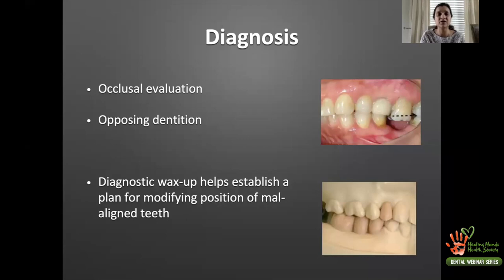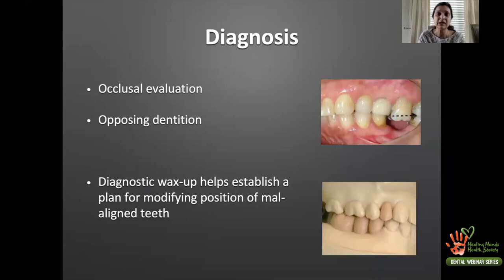In occlusal evaluation, when a tooth is missing the opposing dentition can super-erupt, and a decision must be made whether to reduce it with a burr or whether the super-eruption is so significant that it requires endodontic treatment and full coverage restoration to homogenize the plane of occlusion before placing the implant. The diagnostic wax-up helps establish a plane to modify the position of malaligned teeth.